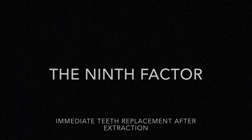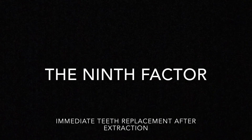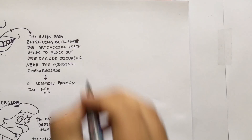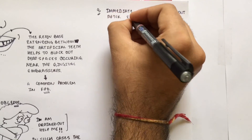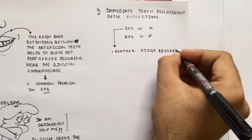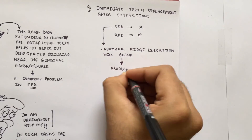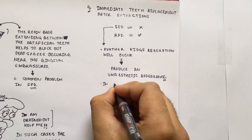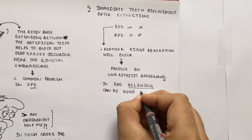The ninth factor is immediate teeth replacement after extraction. This is not successful in the case of a fixed partial denture because further ridge resorption will occur and produce an unaesthetic appearance. In the case of a removable partial denture, relining can be done as resorption occurs.